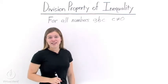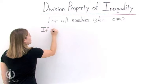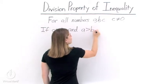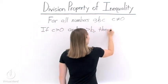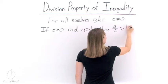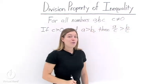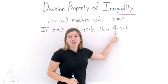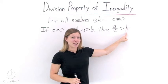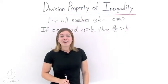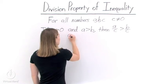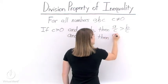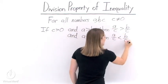First, let's look at when c is greater than 0. When c is greater than 0 and a is greater than b, then a divided by c is greater than b divided by c. So if we divide by a positive number on the left-hand side of our inequality, we must also divide by a positive number on the right-hand side in order to preserve the inequality. Same thing goes if a is less than b — then a divided by c will be less than b divided by c.